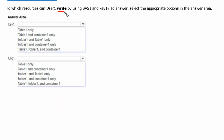In the answer area for key1 access: user1 had Storage Blob Data Reader permission, so they cannot write to container1 — those options are incorrect. For folder1, since Storage File Data SMB Share Contributor is assigned, that statement is correct — user1 can write to the file share. Since Storage Table Data Contributor is assigned, user1 can also write to table1 — that statement is also correct.